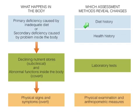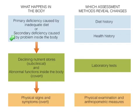A diet history is absolutely critical. Remember our discussion of primary versus secondary deficiency in the malnutrition video? A primary deficiency is caused by not taking in enough of a nutrient, and a secondary deficiency occurs when you're taking in plenty but your body can't use it. The only way to really discriminate between these two is to do a good diet history and figure out how much of a nutrient a patient actually took in.